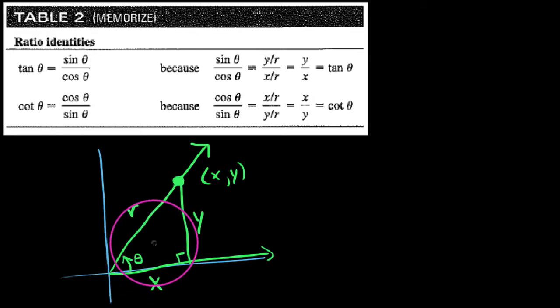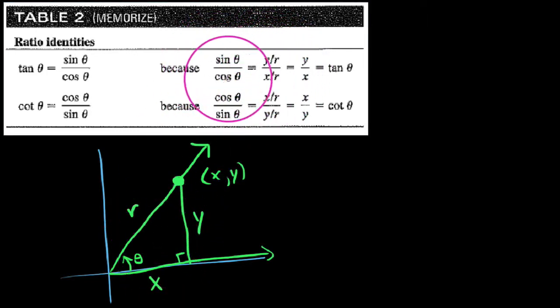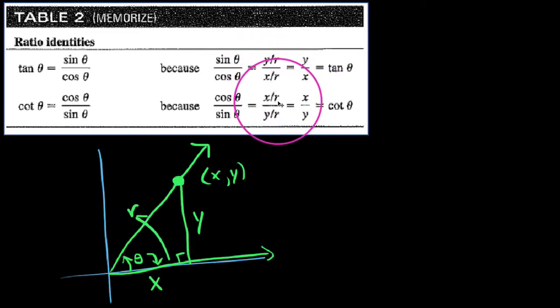We find the sine of this by doing the opposite over the hypotenuse, or y over r, and that's where we're deriving this from. For the cosine of theta, cosine of theta would be the adjacent over the hypotenuse here. Adjacent over hypotenuse would be length x over r, and that would be this x over r here.